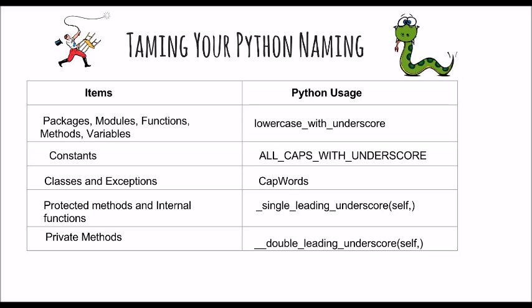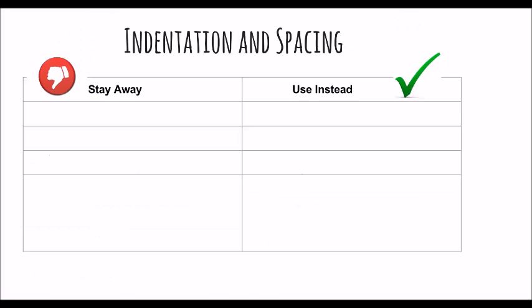Lesson number three: naming makes even Python look beautiful. Indentation and spacing — this is very tricky, so do it right the first time. Spaces are always preferred over tabs. Python does not allow usage of tabs and spaces together, so this is one common error which every Python beginner makes and eventually gets stuck at that line of code not knowing what went wrong.